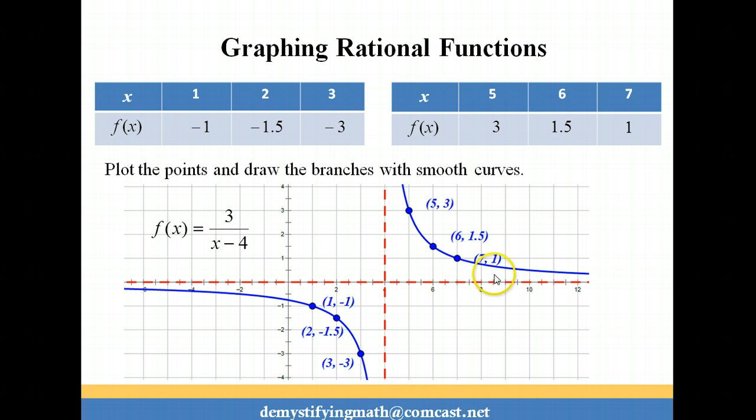As the graph approaches infinity for x, the output values are heading toward 0, toward the x-axis or to the line y equals 0. As we head into negative infinity for x, the y values are heading up to 0, coming in from the negative side. So we have the horizontal asymptote at 0 and the vertical asymptote at 4.